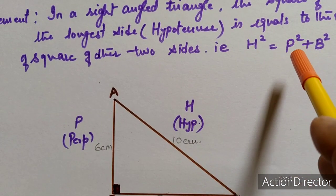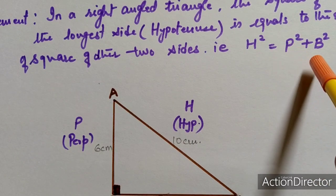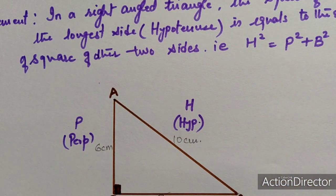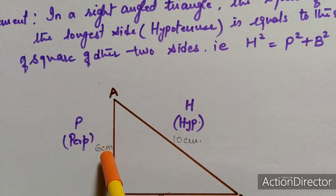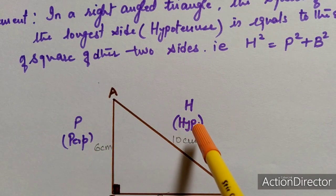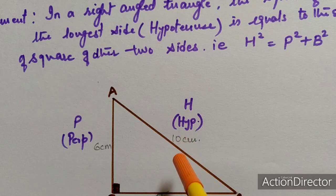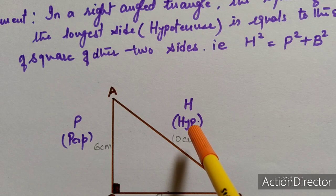Now in order to prove that hypotenuse square equals perpendicular square plus base square, what we are going to do by the cutting and pasting method: we need 3 squares of measurements 8 cm, 6 cm, and 10 cm. We are going to make 3 square pieces of measurements 8 cm, 6 cm, and 10 cm.